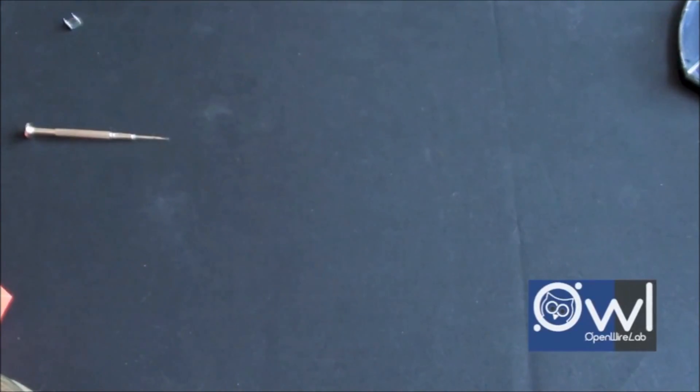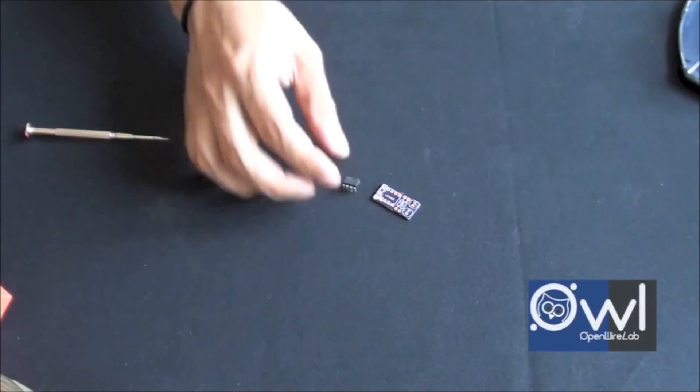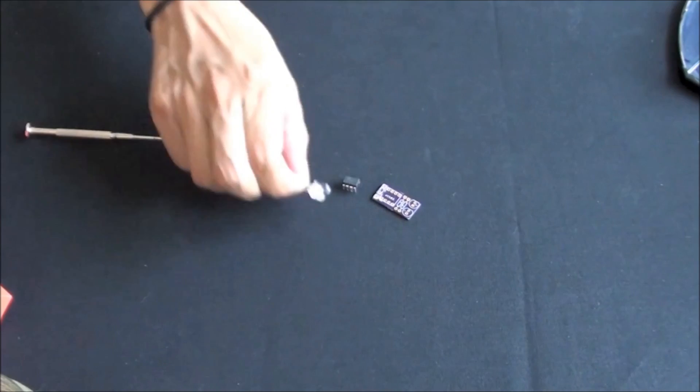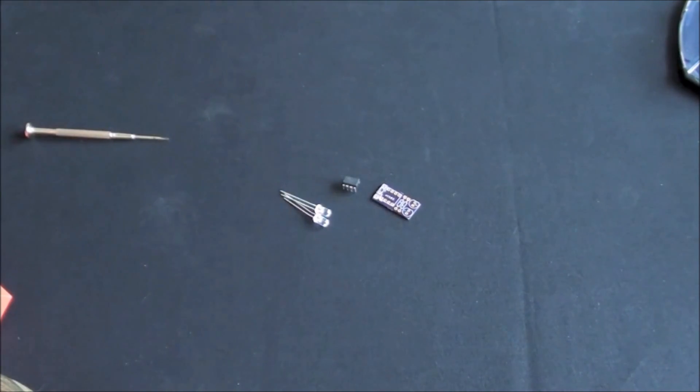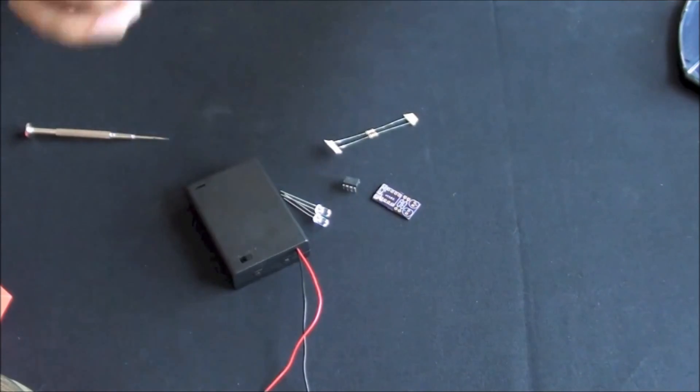In this video, I will be doing a tutorial on Kit 1, which consists of a PCB, a microcontroller, two LEDs, a battery compartment, two resistors, and of course, solder wire.